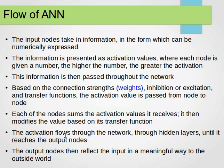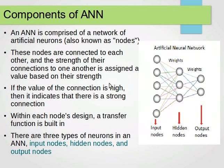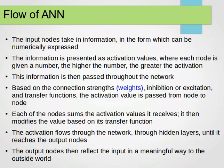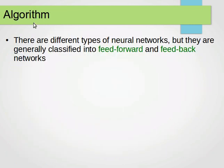The activation flows through the network through hidden layers until it reaches the output nodes. The output nodes then reflect the input in a meaningful way to the outside world — for example, the prediction of a class of something. That's how data flows through an artificial neural network.